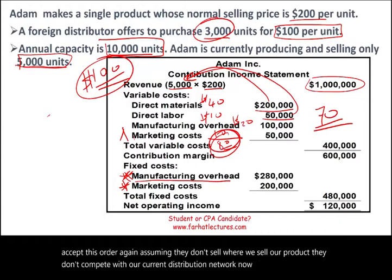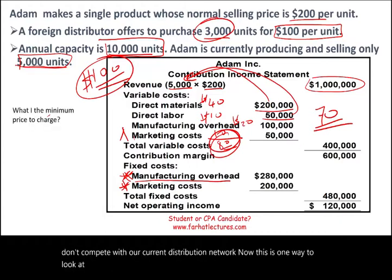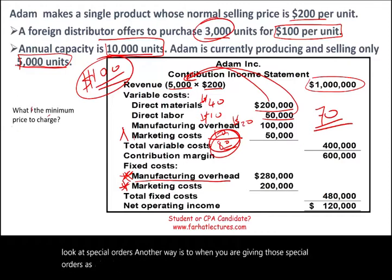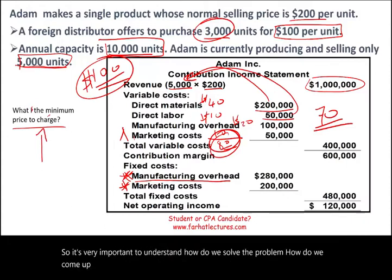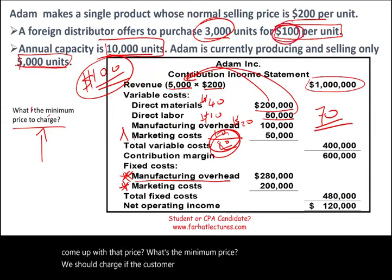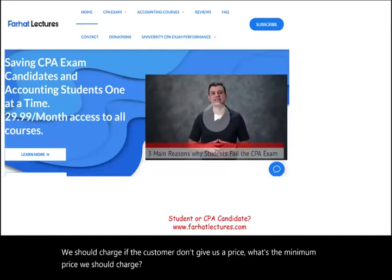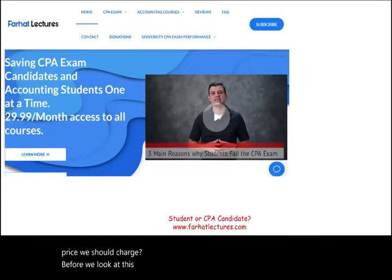Now this is one way to look at special orders. Another way is to determine the minimum price to charge when you have a special order. It's very important to understand how we come up with that price — what's the minimum price we should charge if the customer doesn't give us a price?